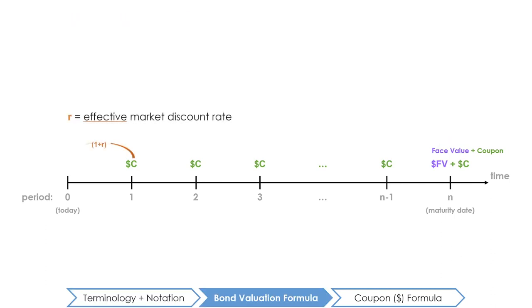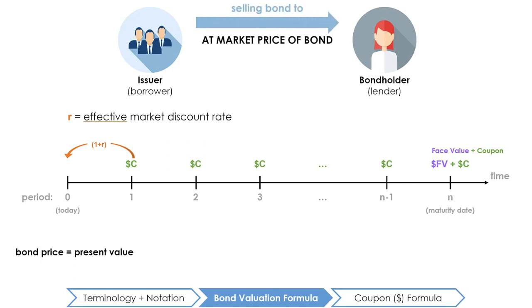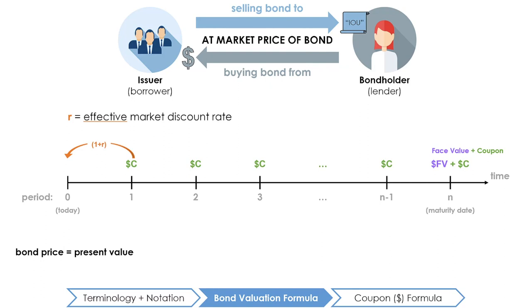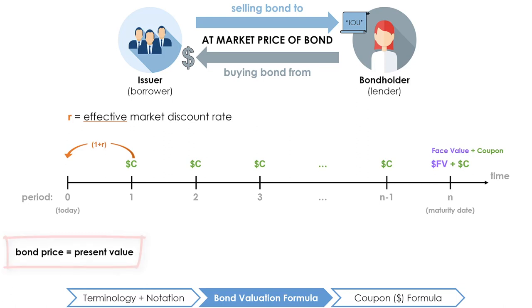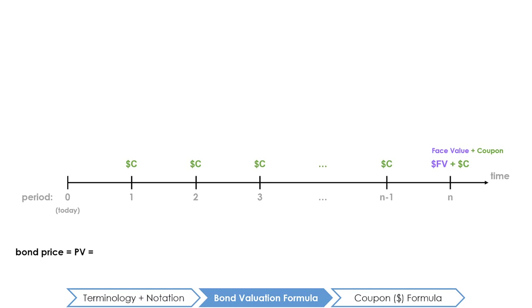If we move all the cash flows of a bond into one point in time using the discount rate R, we can calculate the present value of the bond. This is also the value or the market price of the bond. At the market price, the issuer sells the bond to the bond holder. You can think of this as the bond holder buying the issuer's promise to pay back the predetermined coupons and principal by the maturity date. Intuitively, it makes sense that the market price of a bond is its present value, because how much the bond holder is willing to lend to the issuer today is equal to the value of the future cash flows the bond holder expects to receive. The market rate reflects the return a bond holder could earn on comparable bonds. We will use PV to represent the present value or the market price of the bond.